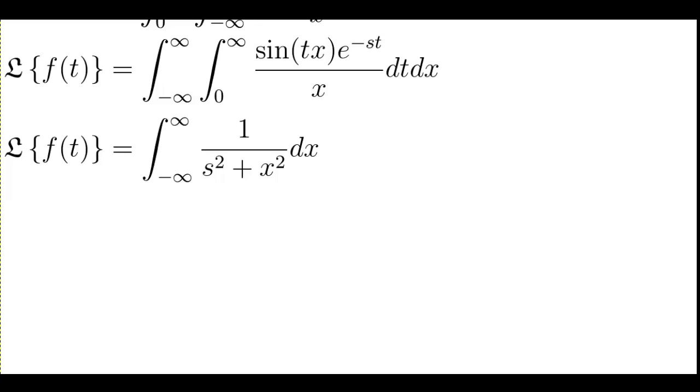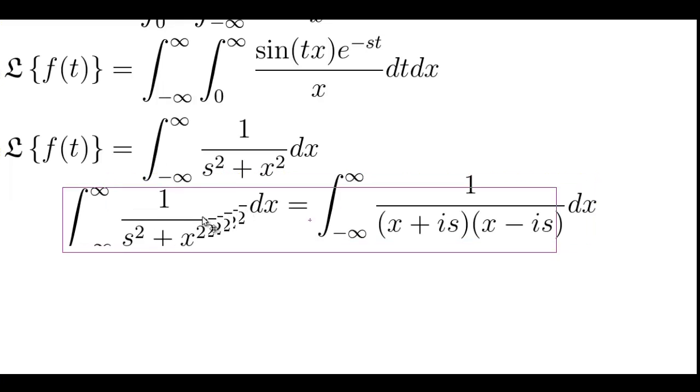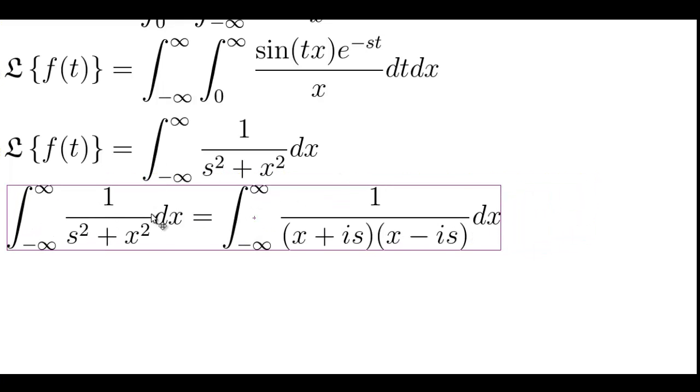That means the first step that we have to do is identify the simple poles of the function, i.e. where the function divides by zero essentially. And we can do that by factoring the bottom of the fraction.